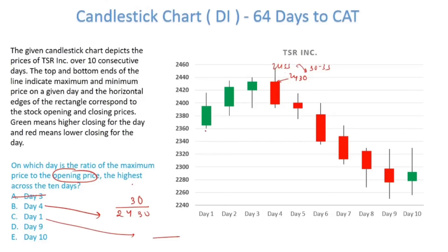For day 1, the opening price is around 2365 and the maximum price is around 2415, giving a change close to 50. The ratio of change to base is close to 1.6. For day 4, the denominator is higher, so day 4 is not better than day 1. Between days 9 and 10, the opening price on day 9 is higher while the maximum prices are mostly the same, so the ratio is higher on day 10 than day 9. Day 9 is eliminated.